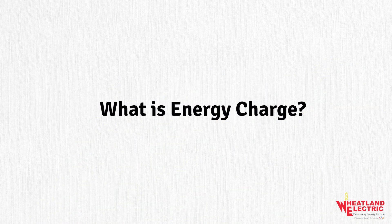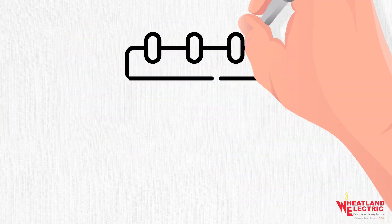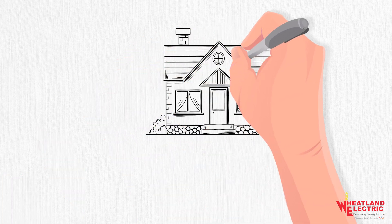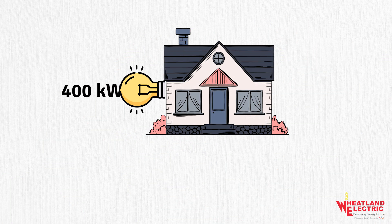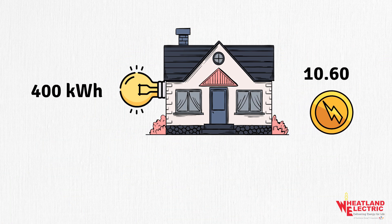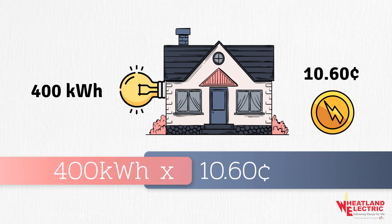The next component of your bill is the energy charge, measured in kilowatt hours or KWH — the total kilowatt hours consumed over the billing month times the kilowatt hour rate. For example, if your home uses 400 kilowatt hours in a billing month at a rate of 10.60 cents per kilowatt hour, your energy charge would be 400 KWH × 10.60 cents = $42.40.